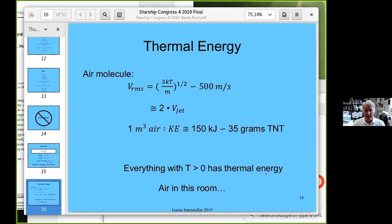I'd like to shift gears and look at thermal energy. If you look at an air molecule, the root mean square velocity is about 500 m/s, which is about twice the velocity of a typical jet airplane. So in the room you're sitting in, the air molecules are bouncing off of you at twice the speed of a jet plane. Since they're bouncing evenly in all directions, the pressure is uniform. But if you look at it in terms of pure kinetic energy, in one cubic meter of air, the kinetic energy is roughly 150 kJ, equivalent to 35 grams of TNT.